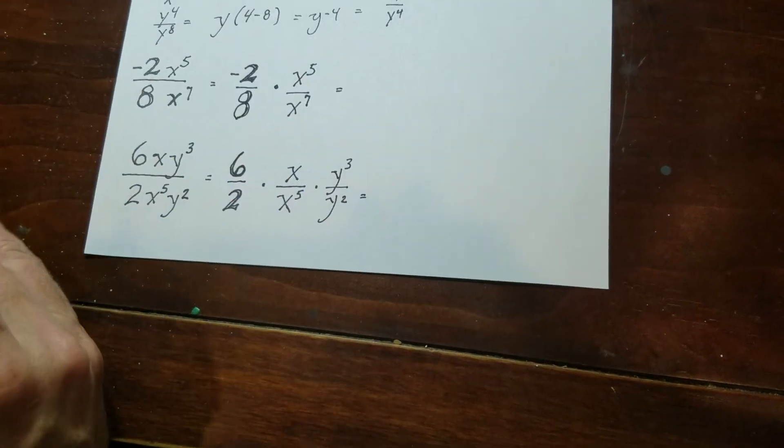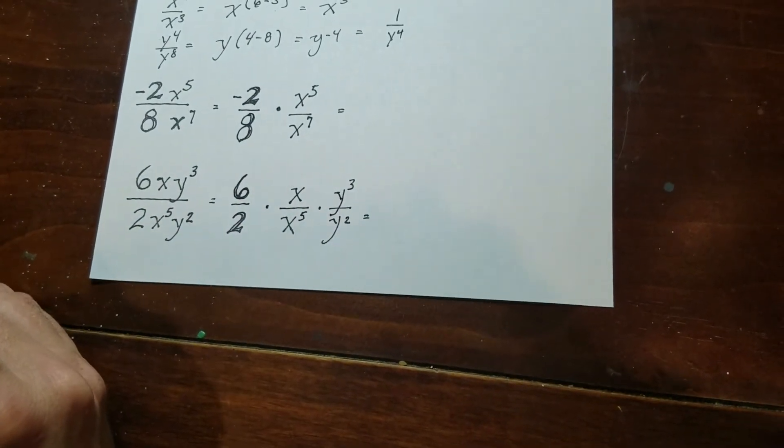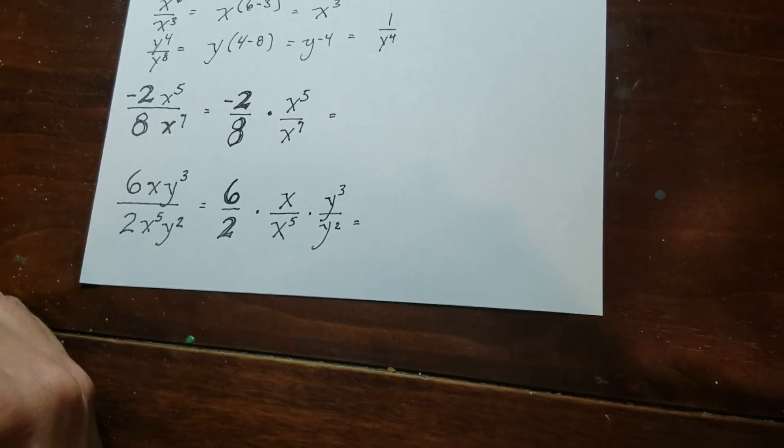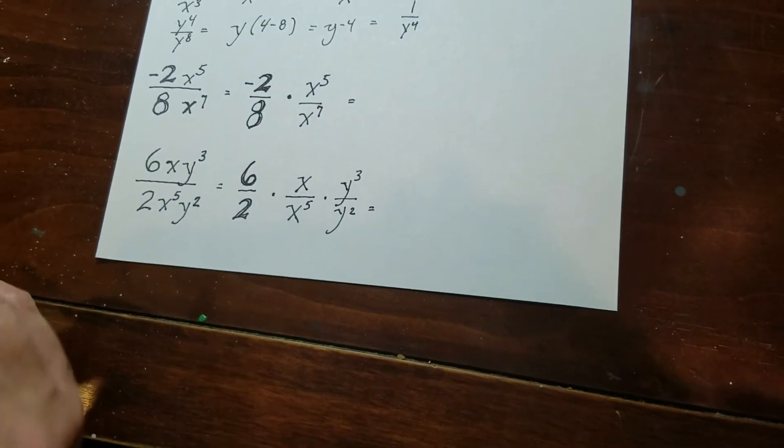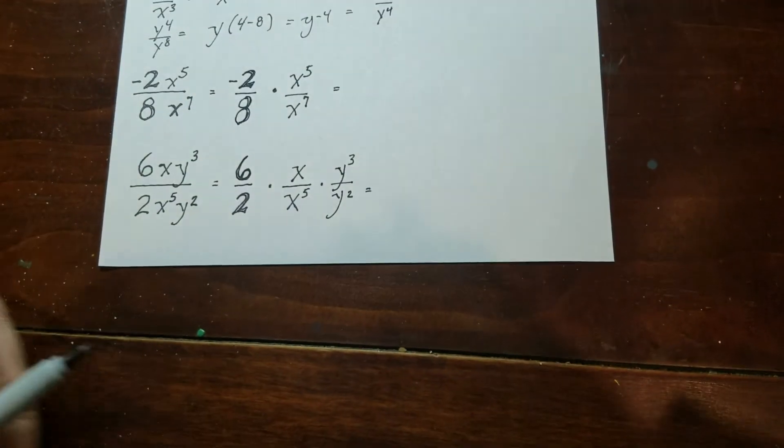So that's basically the rule, is that as long as the base is the same, you're going to subtract the exponents, which is the opposite of when you multiply, you actually add the exponents when the bases are the same. Now, let's look at these guys down here, because this is usually what you're going to encounter.